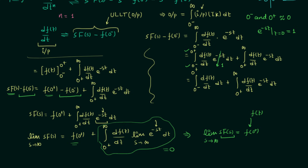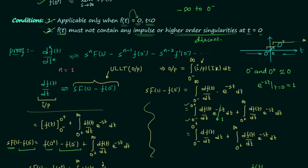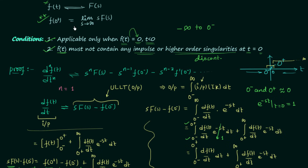If you look at the property we stated initially, it is the same result. In this way you can easily prove the initial value theorem. I hope you now understand the different steps involved in the proof and the conditions of the initial value theorem. If you have any doubt, you may ask in the comment section.